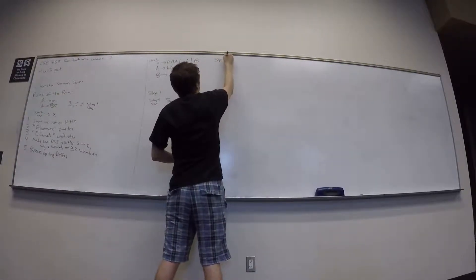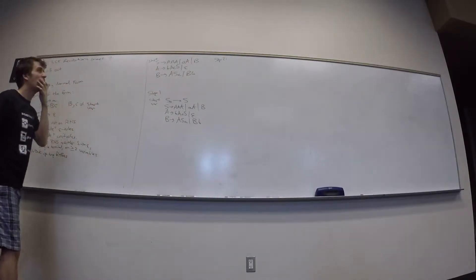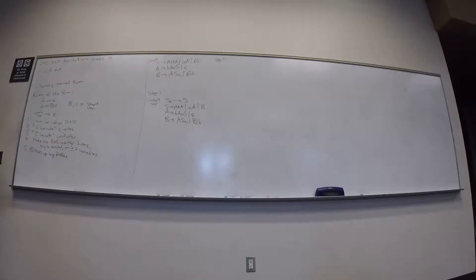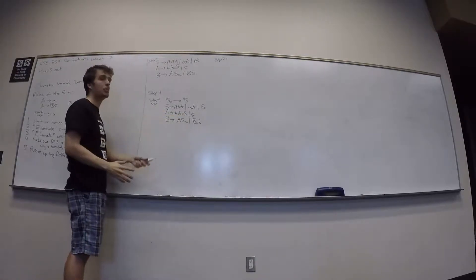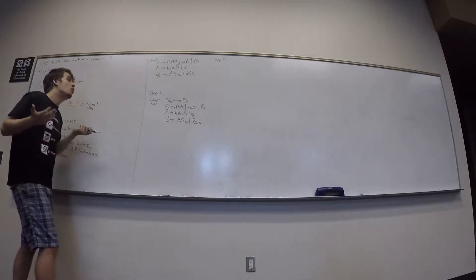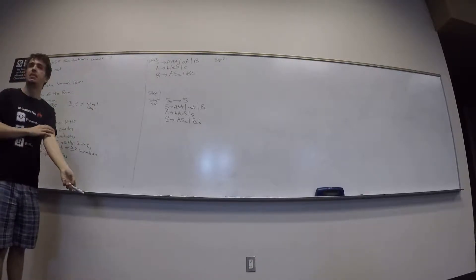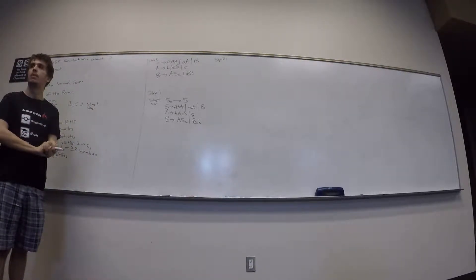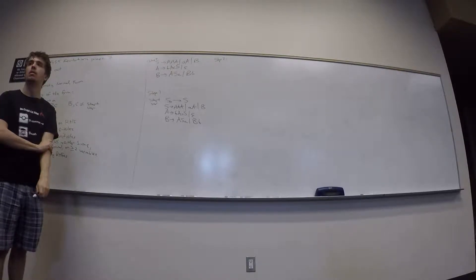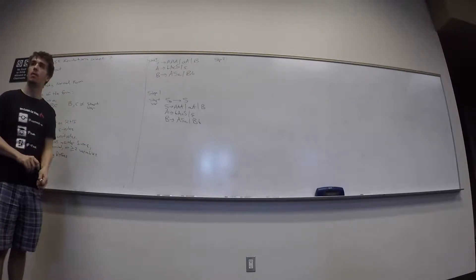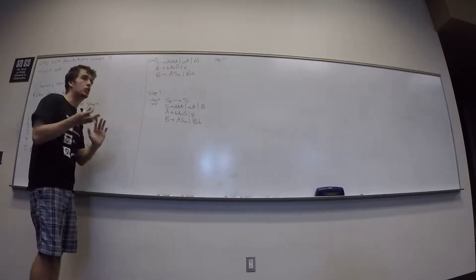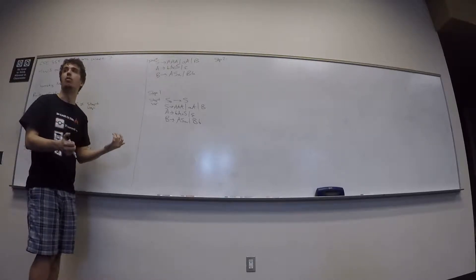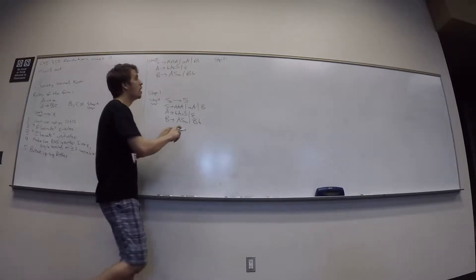Next step: simulate epsilon rules. We have a non-start variable going to epsilon, which we can't have. To reduce complexity, first find the nullable variables — a nullable variable is one that can produce epsilon in some number of rule applications. A is explicitly nullable.